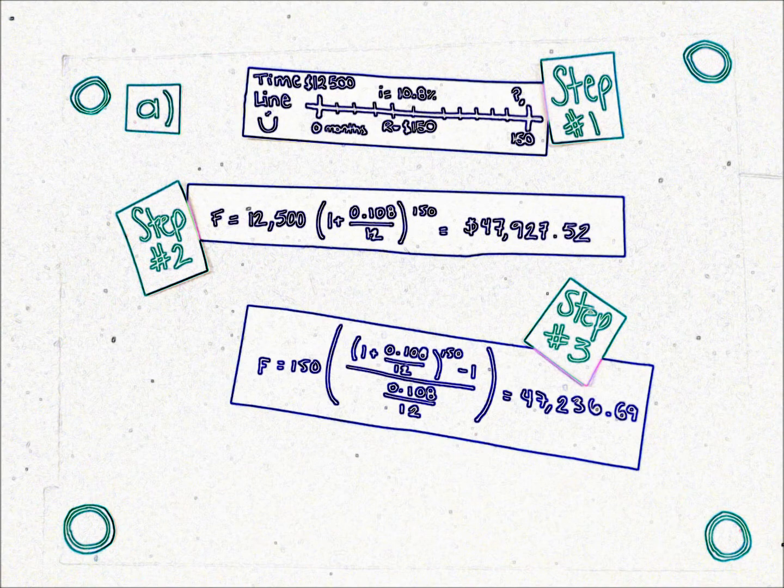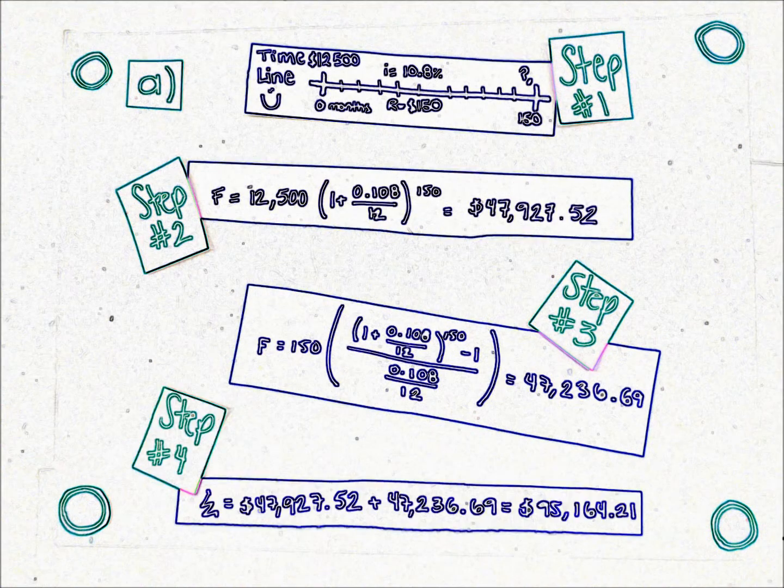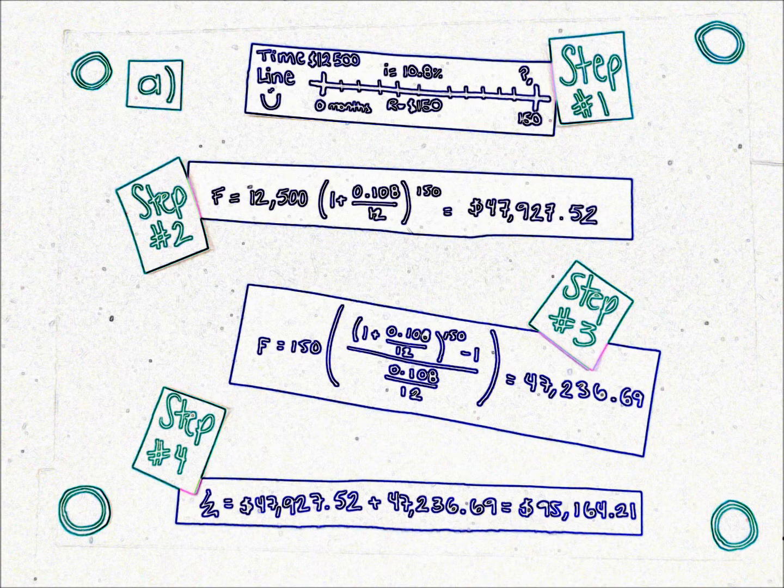Then we have the contributions. For that, we're going to need another formula, still for calculating the future value. Having the value of the contribution, the number of periods, and the compounded nature of interest, we make the substitution, and we have our second result. To get the total and the answer to A, all we have to do is to add them both, and you can see the result in step four.